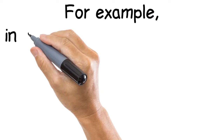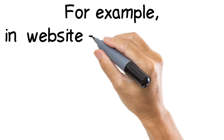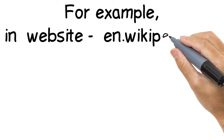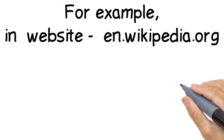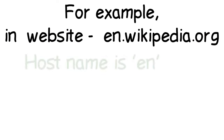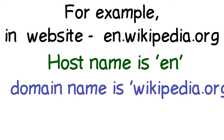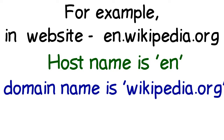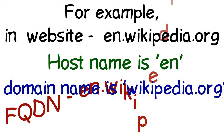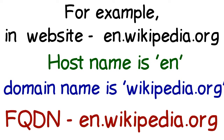For example, in the website en.wikipedia.org, 'en' is the hostname, 'wikipedia.org' is the domain name, and 'en.wikipedia.org' is the Fully Qualified Domain Name.